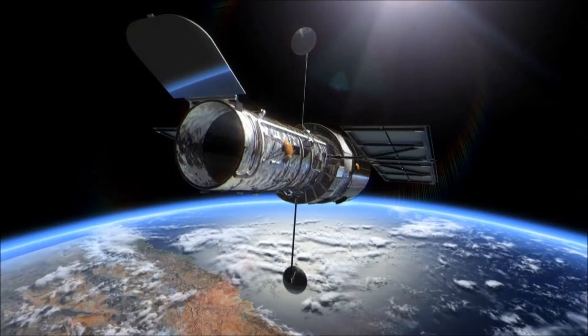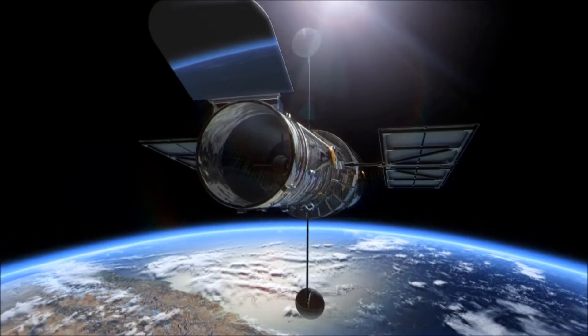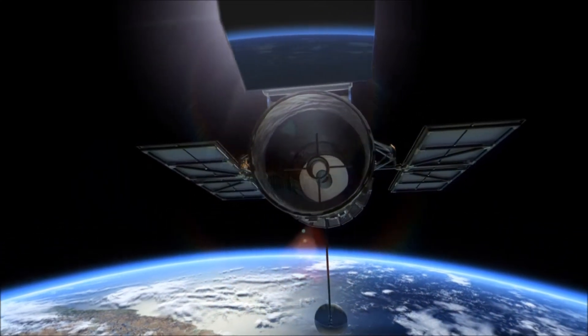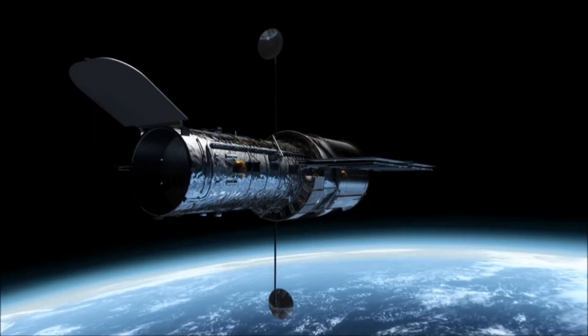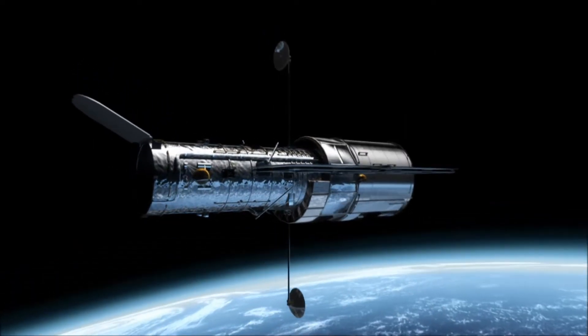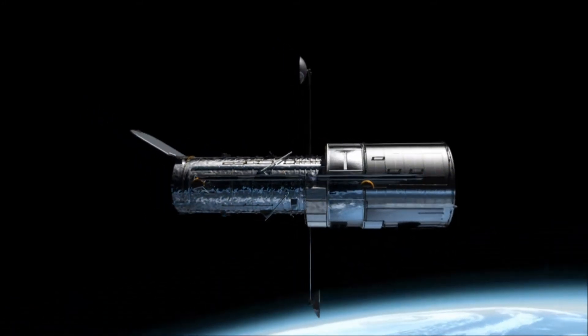By modern standards, Hubble's mirror is actually quite small. It only measures about 2.4 meters across. But its location is literally out of this world. High above the blurring effects of the atmosphere, it has an exceptionally sharp view of the universe.